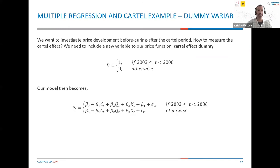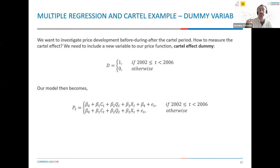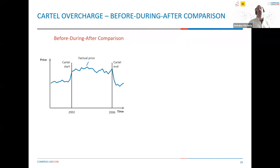Our D variable, which aims to capture the effect of the cartel, is a cartel effect dummy. This means the variable equals one for the period during which the cartel was in place. In our example, we assume the cartel ran from 2002 to 2006. It is equal to one during the cartel period and zero otherwise — so before the cartel and after the cartel, this variable is zero. During the period of practices, we add that dummy variable and estimate the beta four coefficient. Before and after the cartel, the dummy equals zero, so the model is simpler: only the effect of costs, demand, and product characteristics on prices.